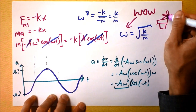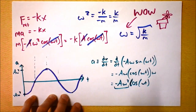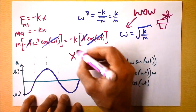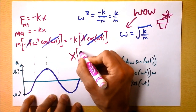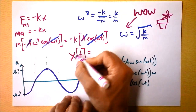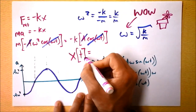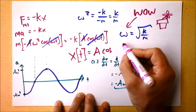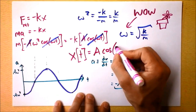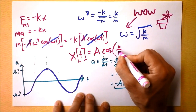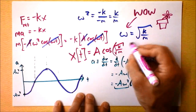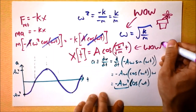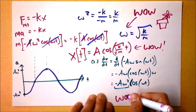This is the full equation for the position of a mass on a spring. The position depends on time like this: it is the amplitude times the cosine of the square root of k over m, times time. Wow — this is how the position of a mass on a spring depends on time.